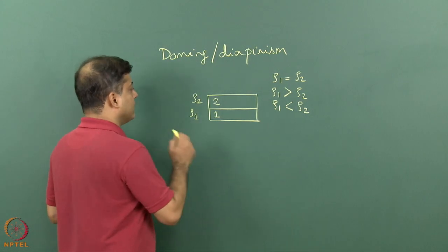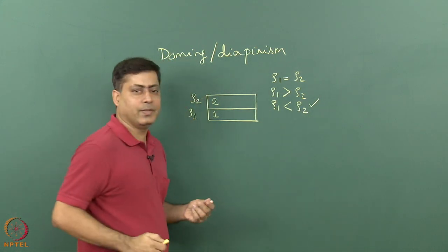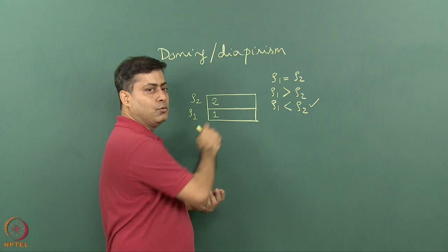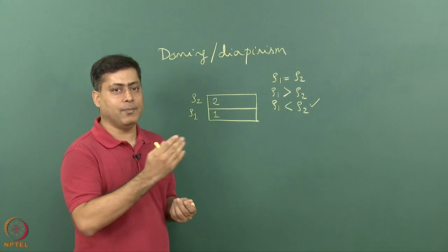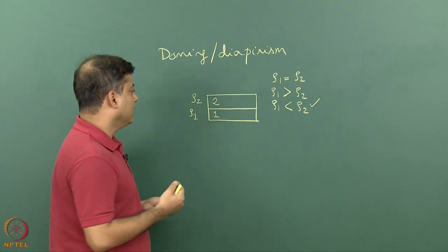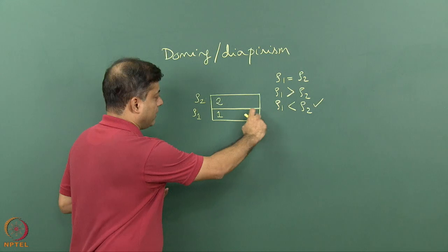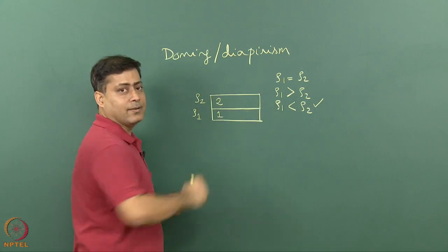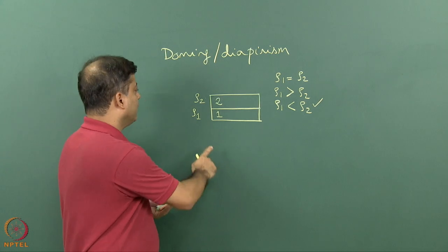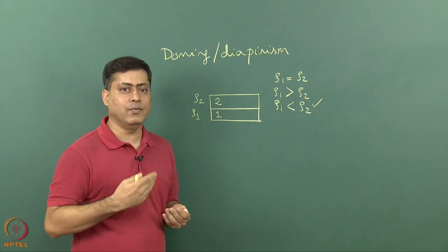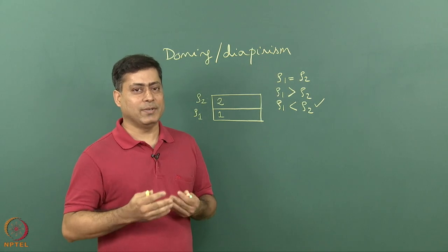On the other hand, if rho two is denser than rho one, then over time fluid two will start moving downward and the lighter fluid will start moving upward. Imagine kerosene layer here and over that a water layer. Water will move down and kerosene will move upward, leading to doming or diapirism in nature.